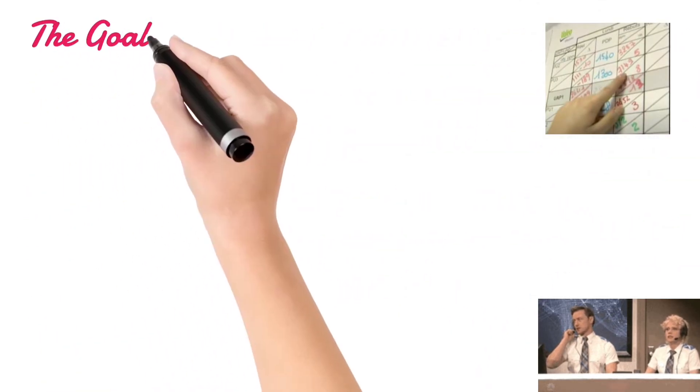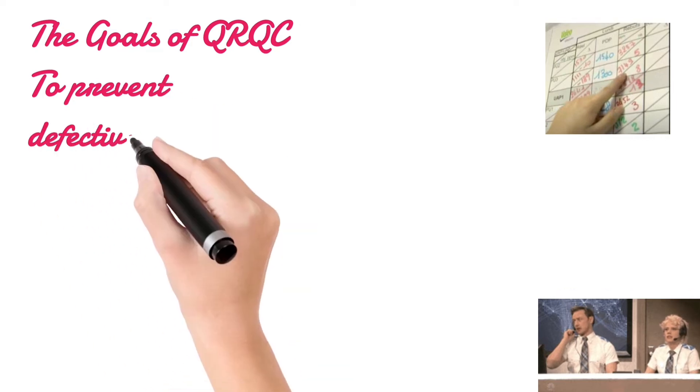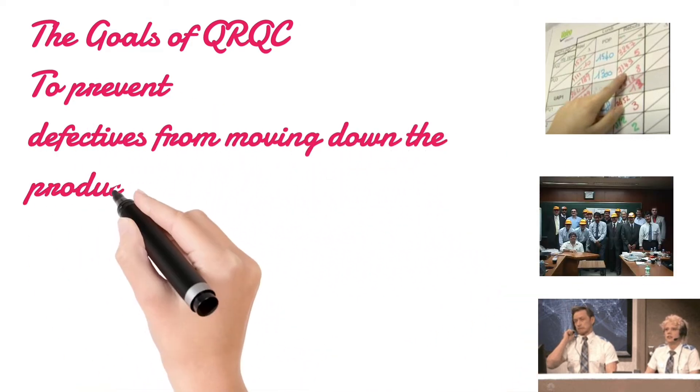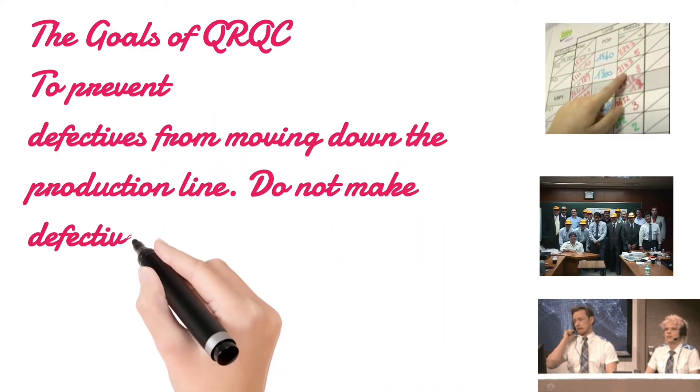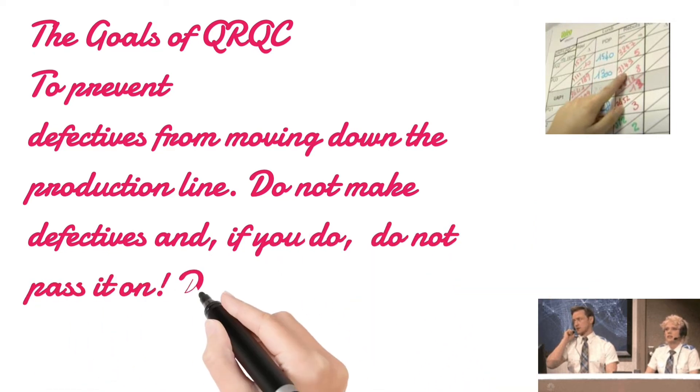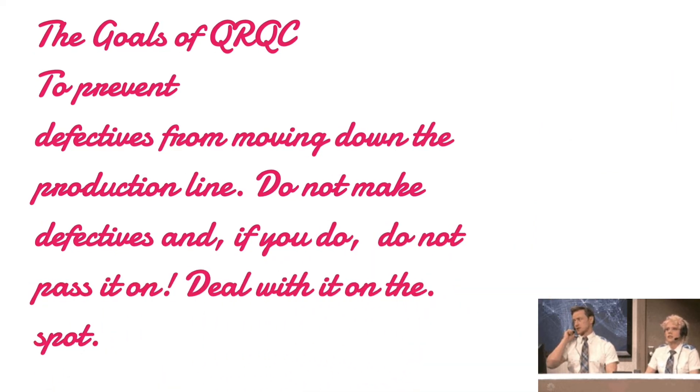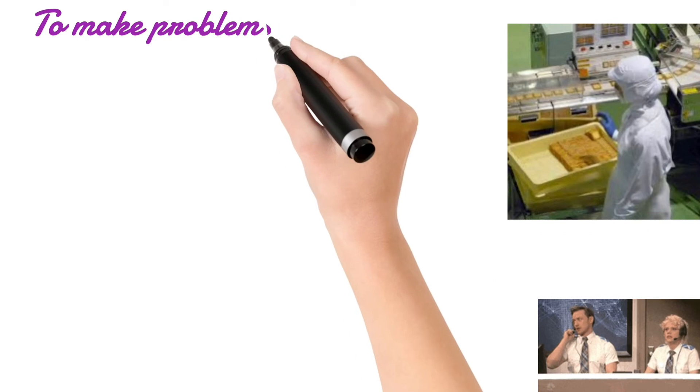The goals of QRQC: to prevent defectives from moving down the production line, do not make defectives, and if you do, do not pass it on. Deal with it on the spot to make problems visible and solve them quickly.